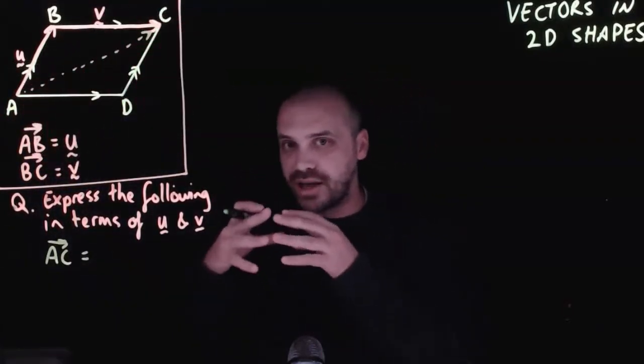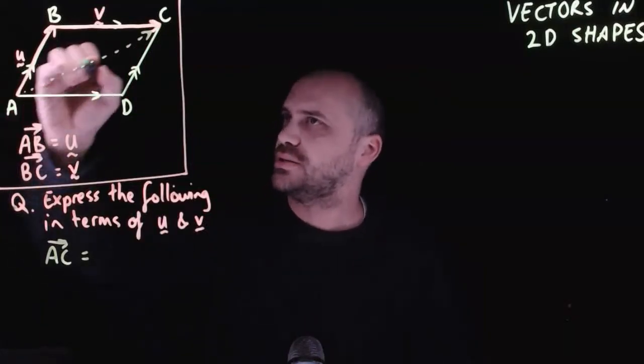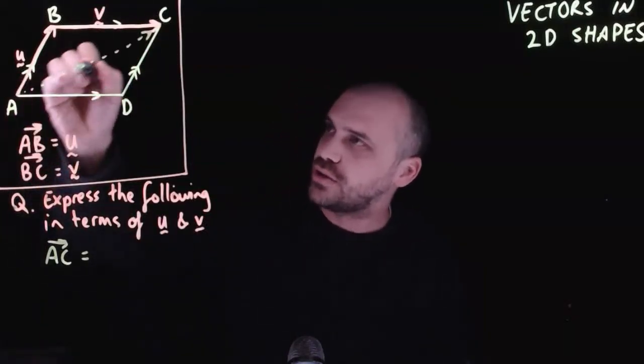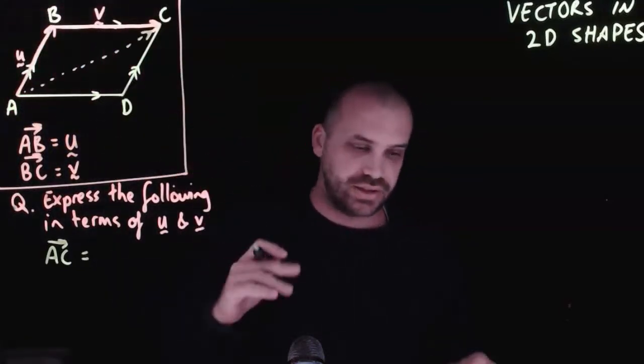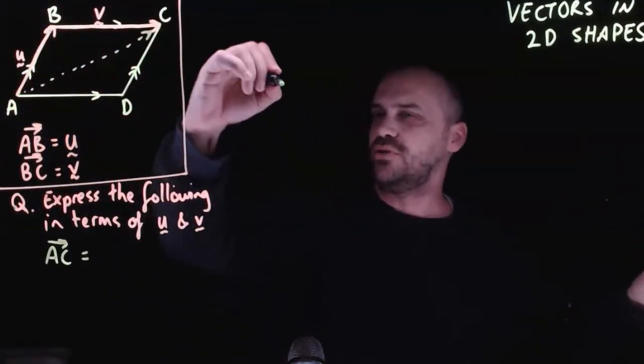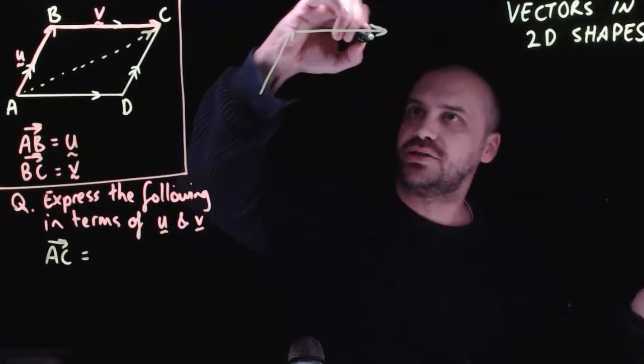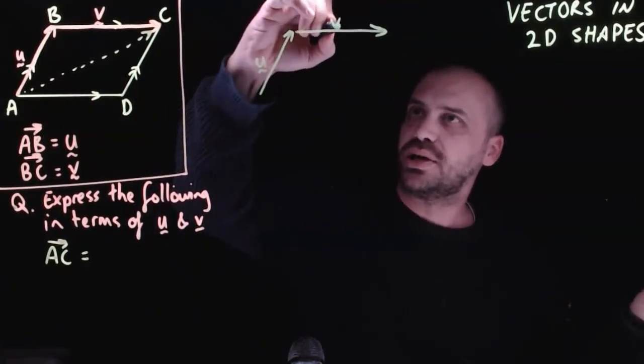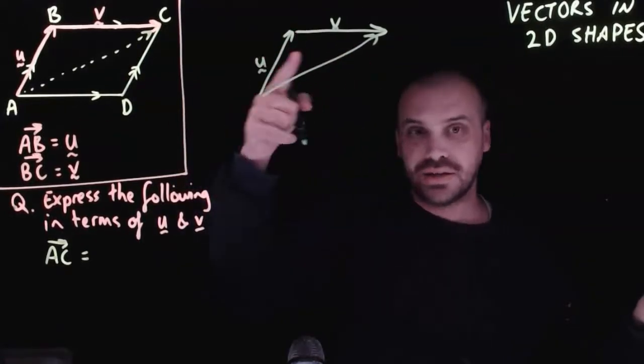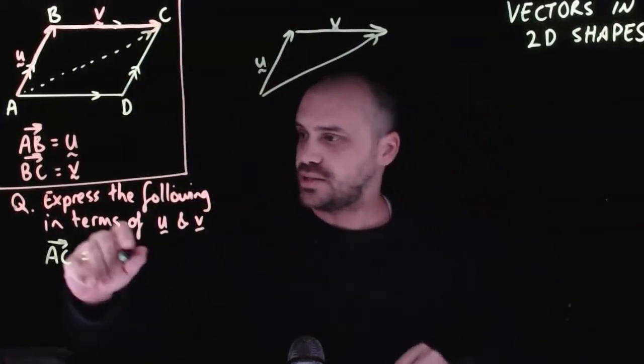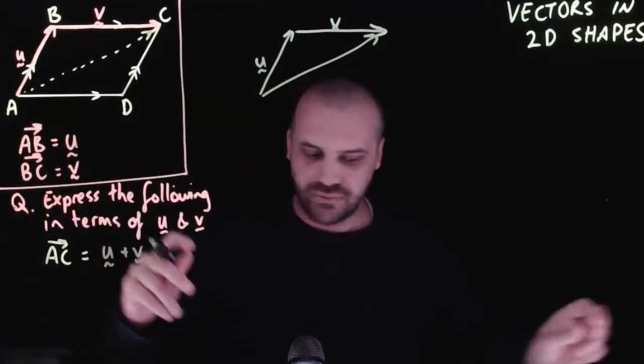And we can create a linear combination of vectors. To get from A to C, we can go the short way, or we can go along vector U, and then along vector V. If I draw that over here, it looks like vector U plus vector V. Vector U plus vector V will equal this vector AC. Vector AC is equal to U plus V.